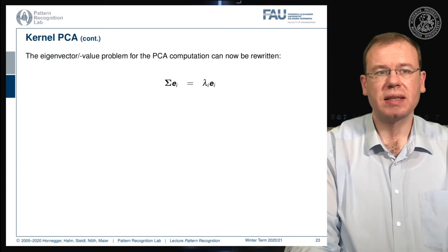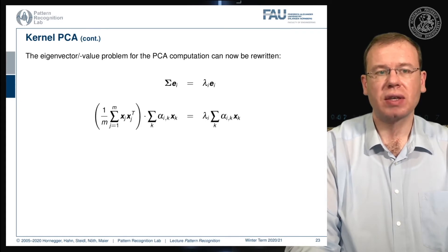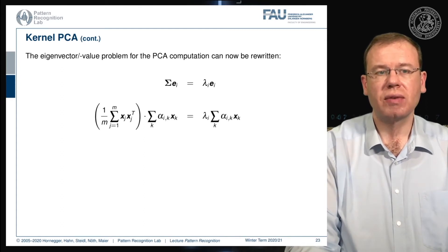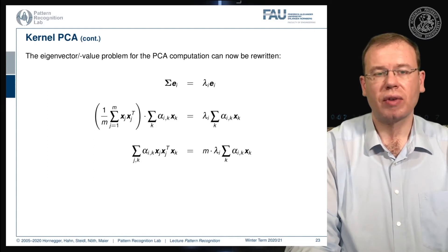This means that we can now rewrite the eigenvector-eigenvalue problem for the PCA in the following way. We replace the eigenvectors with the previous definition — on one side we replace the scatter matrix with the outer product and we replace the eigenvectors with the alpha-x sum, and we also do that on the right hand side. We can then rearrange this, bringing the sums on the left hand side together and bringing m to the other side of the equation.